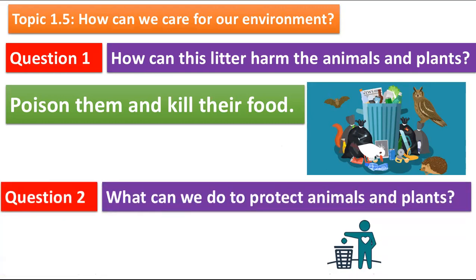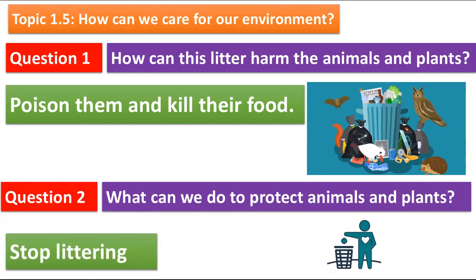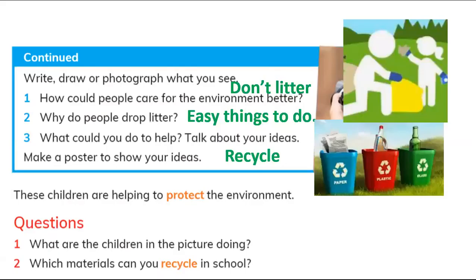Question two: what can we do to protect animals and plants? How can we save them? Simple — just stop littering. Whenever you see litter around you, pick it up and put it in the bin. The next activity: you have to draw or photograph what you see.